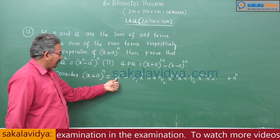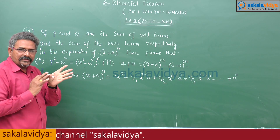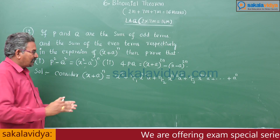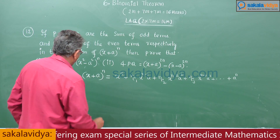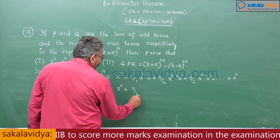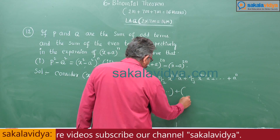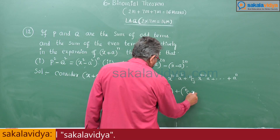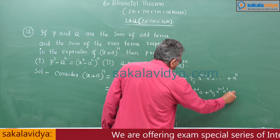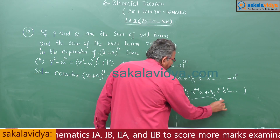Observe carefully: this is the first term, second term, third term, fourth term, and so on. The sum of odd terms means the first, third, fifth, seventh terms. The sum of even terms means the second, fourth, sixth terms. Regrouping: odd terms give x^n + nC2·x^(n-2)·a² + ..., and even terms give nC1·x^(n-1)·a + nC3·x^(n-3)·a³ + ...